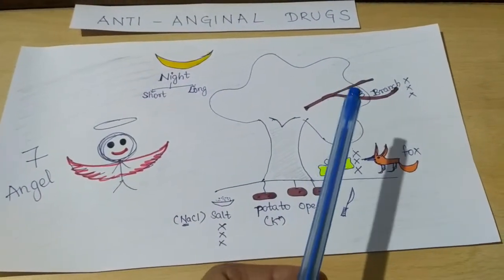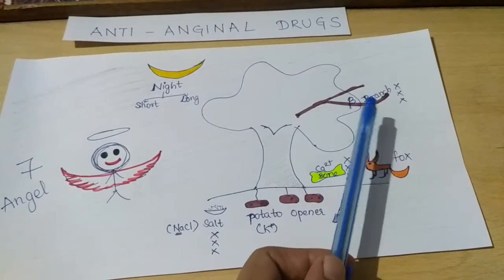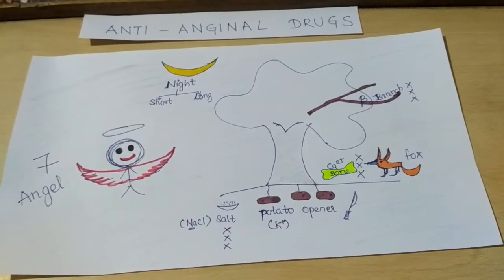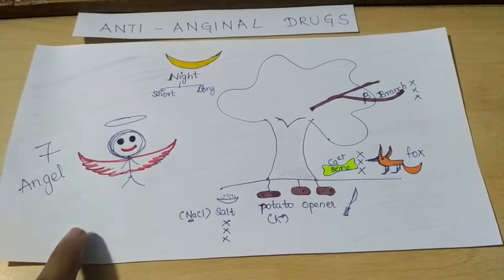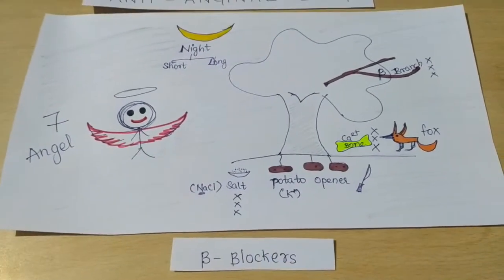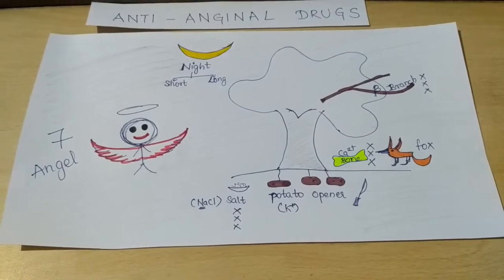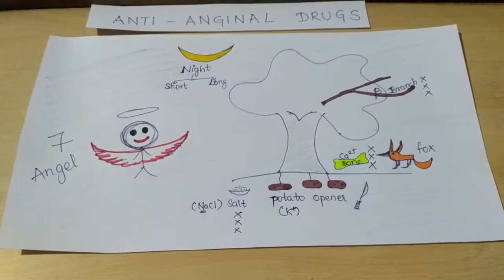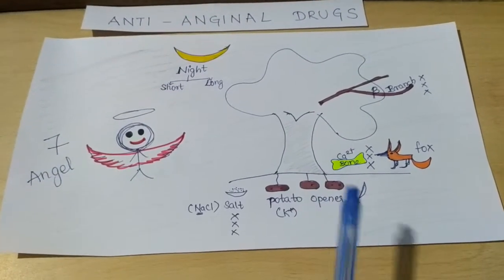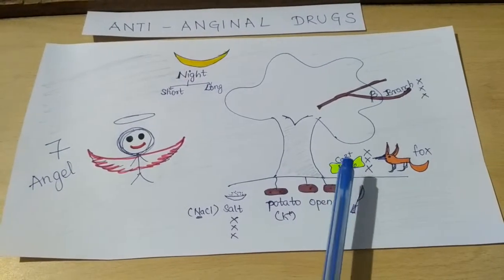Then we see there is a branch extending out of the tree — this is a beta branch, and we need to block it. So this will tell us the drug class: beta blockers.